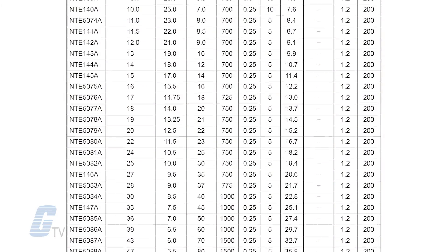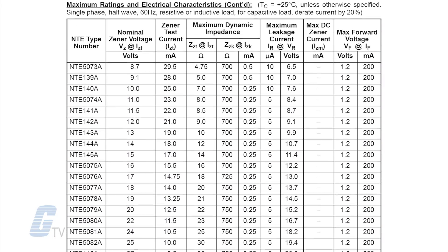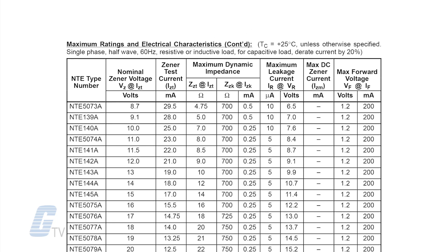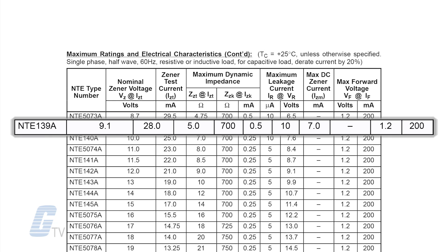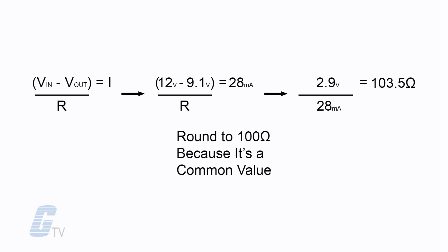Next, I refer to the Zener's data sheet to find the Zener's ratings and I use some basic calculations to build a test circuit. My Zener diode part number equals NTE 139A. Zener voltage equals 9.1 volts DC. Power rating equals 1 watt. Test current equals 28 milliamps. Calculate the ohm value for the current limiting resistor — it's okay to round to a common resistor value.